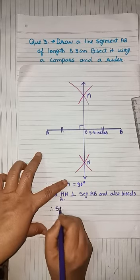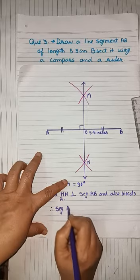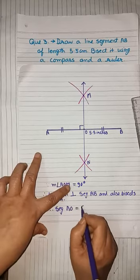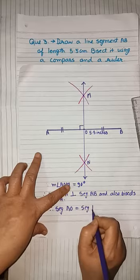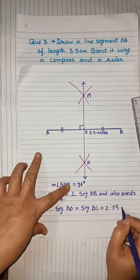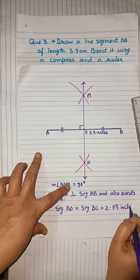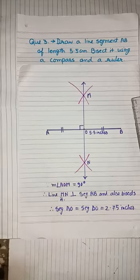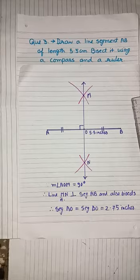Therefore seg AO is equal to seg BO is equal to 2.75 inches for my construction and 2.75 cm for your construction. Students, you have to do all constructions from all videos in your copy.